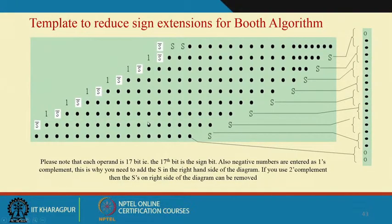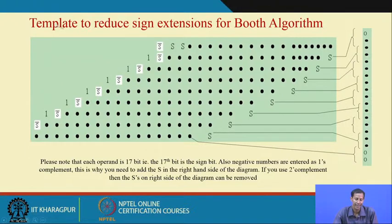There are several ongoing research efforts to find the optimized circuit for multiplier design using Booth's algorithm. Many papers are available on Google or IEEE sites — if you are interested or working on multiplier architecture, you can search there. To reduce the number of extended sign bits in Booth's multiplication, we can use the template method.